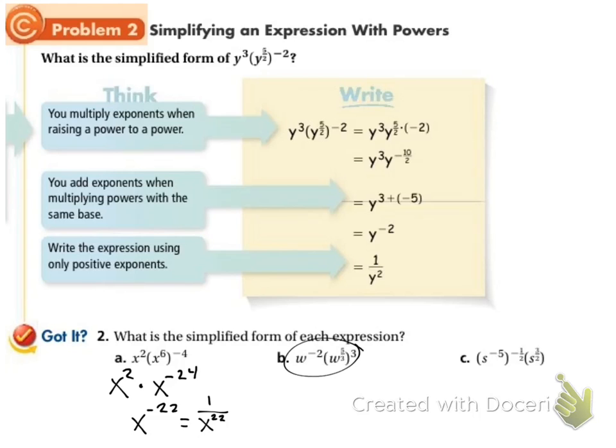Let's try this one. So I'm going to leave the w to the negative two alone. And then I've got w to the five thirds to the thirds. So I've got five thirds times three. I'll write this as a fraction. Five times three is fifteen, three times one is three. And when we divide fifteen by three, we get five. So this ends up being w to the fifth. And then I can add these exponents. Negative two plus five, that's positive three. So w to the third.